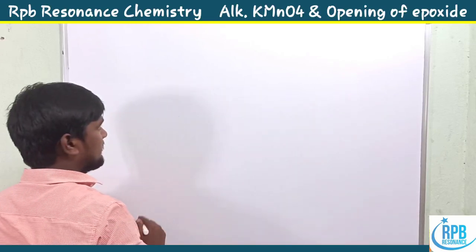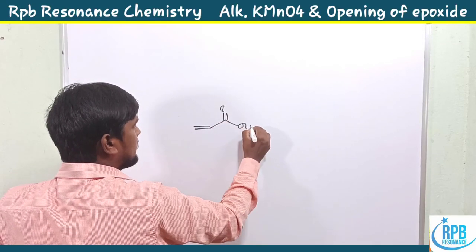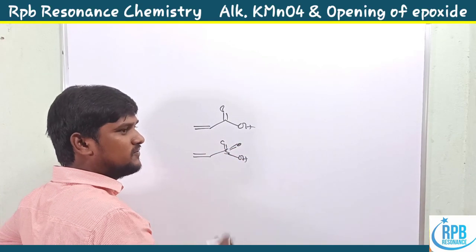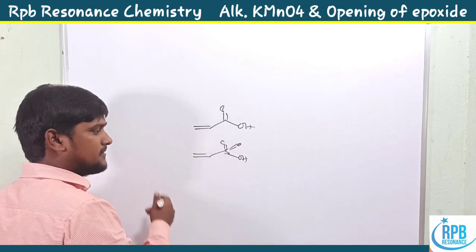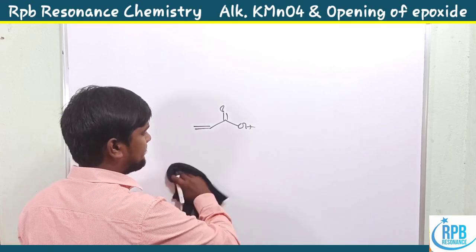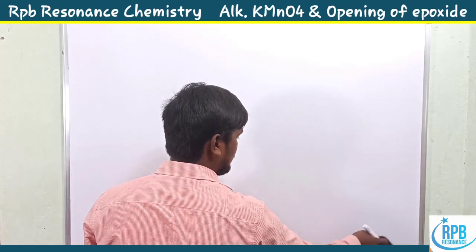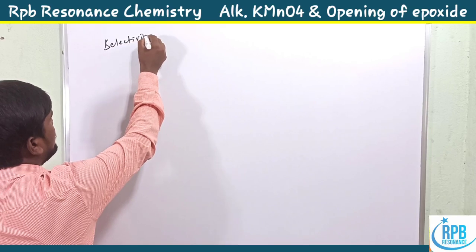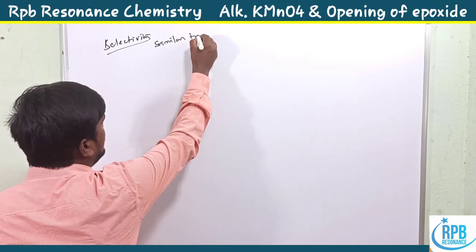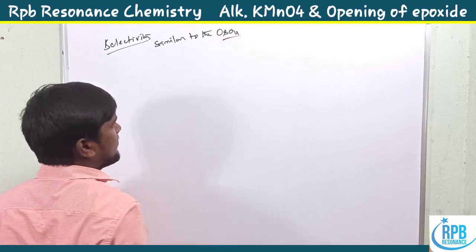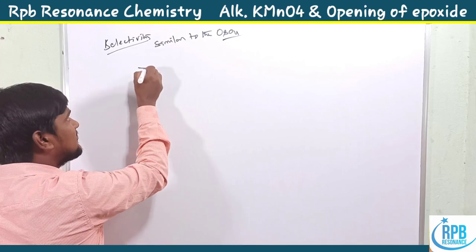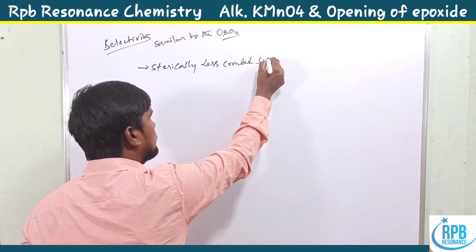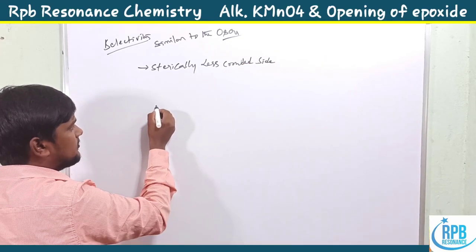An advantage of KMnO4 is that in the presence of unsaturated carboxylic acids or unsaturated sulfonic acids — which are water-soluble — it is very useful for diol formation. The selectivity of KMnO4 is similar to that of osmium tetroxide: it forms diols at the sterically less crowded site.